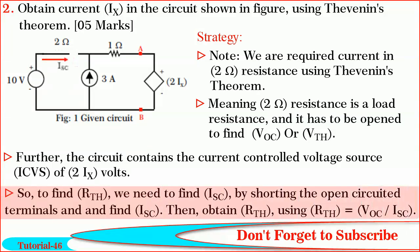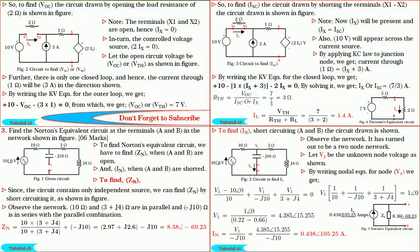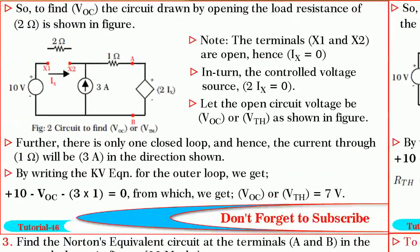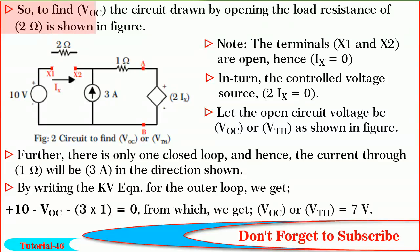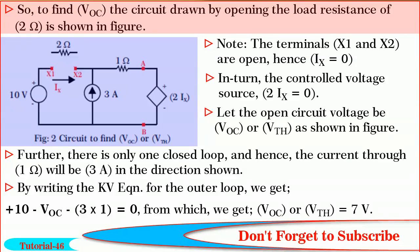Then we have to obtain R-Thevenin using R-Thevenin equals V-OC divided by ISC. So, friends, to find VOC, the circuit drawn by opening the load resistance of 2 ohm is shown in the figure.